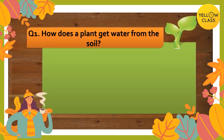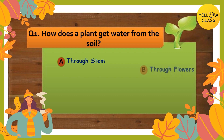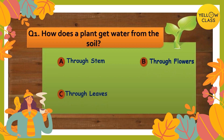Let's start! Question number one: how does a plant get water from the soil? Your options are: option A through stem, option B through flowers, option C through leaves, and option D through root. Your time starts now!